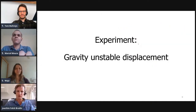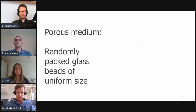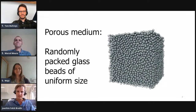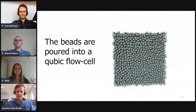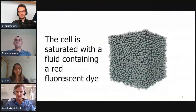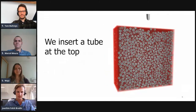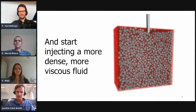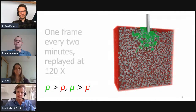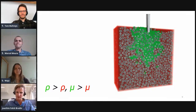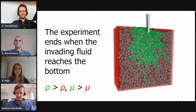I'll show you what an experiment can look like with this setup. The porous medium is a randomly packed glass bead, all the same size — 3 millimeters in this case. The beads are in a cubic flow cell, about 8 by 8 by 8 centimeters. We start with a defending fluid which has a red fluorescent dye, and then we inject another fluid from the top — green in this case — which is more dense and more viscous. We capture one frame every two minutes, replayed here much faster, and run the experiment until the invading fluid reaches the bottom.